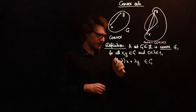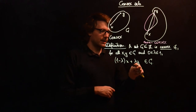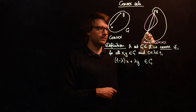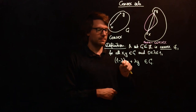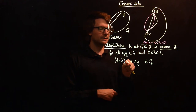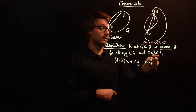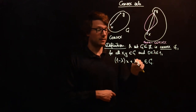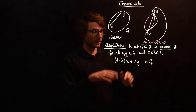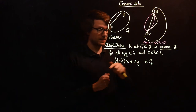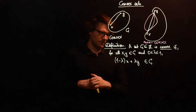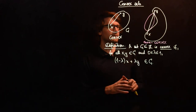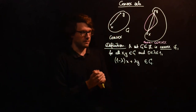Why is this a straight line? If you set lambda equal to 0 you end up at x, if you set lambda equal to 1 you end up at y, and the expression is linear in lambda — so this traces a straight line.